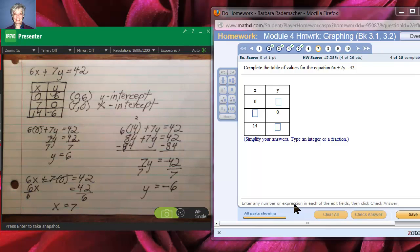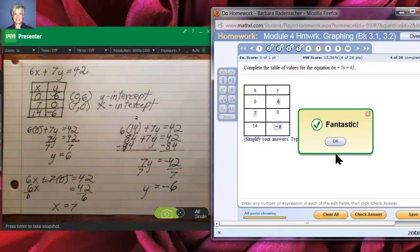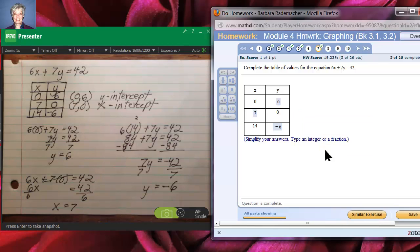Now let's put these numbers in. If x is 0, y is 6. If y is 0, x is 7. And if x is 14, y equals negative 6. Let's see if that's right. Yes, it is. That's how you do that kind of problem.